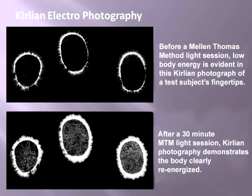In the top photograph, the test subject put three fingers on a Kirlian camera plate — this is like checking your body's battery charge. You can see the gaps in the corona or electron emission around the subject's fingertips. It has a lot of gaps and spikes, which means the subject has very low body energy.